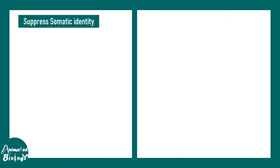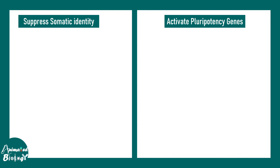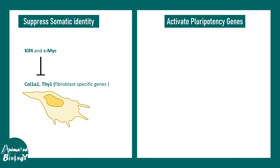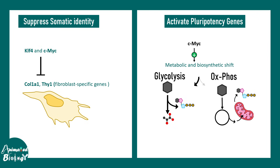The question is how suppression of somatic identity and activation of pluripotency genes takes place. Factors like KLF4 and c-MYC repress fibroblast-specific genes such as COL1A1 and THY1. c-MYC also promotes a metabolic and biosynthetic shift — whereas cells normally prefer oxidative phosphorylation to generate ATP, metabolism shifts toward glycolysis. c-MYC up-regulates enzymes required for glycolysis, making the cell metabolically similar to a stem cell.